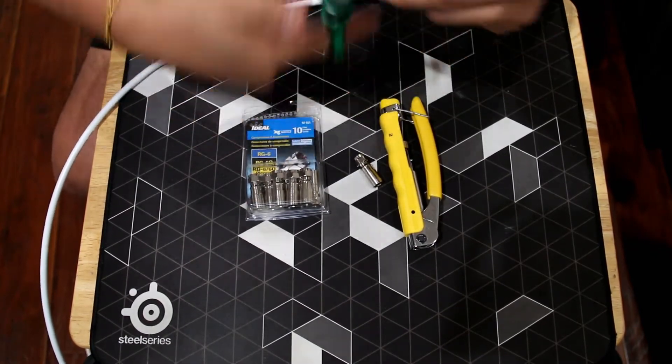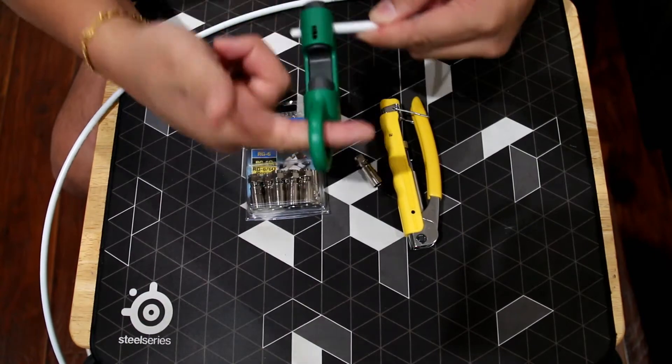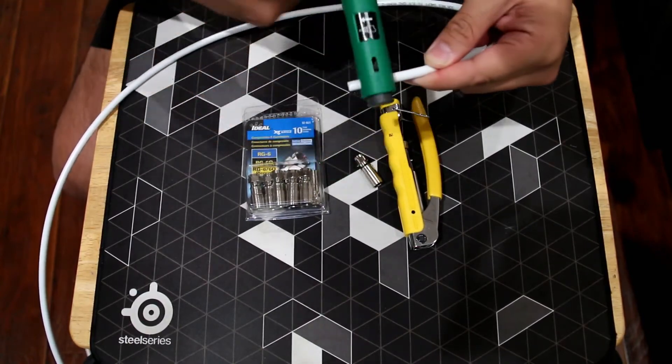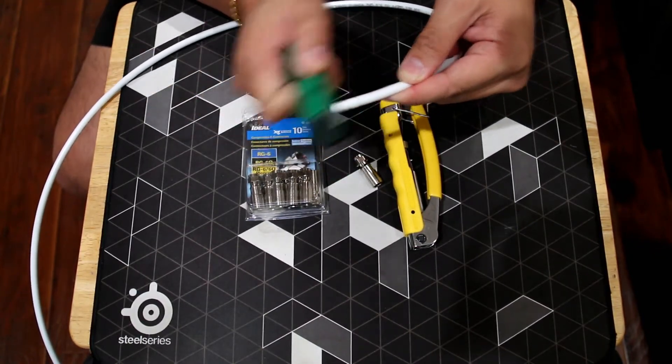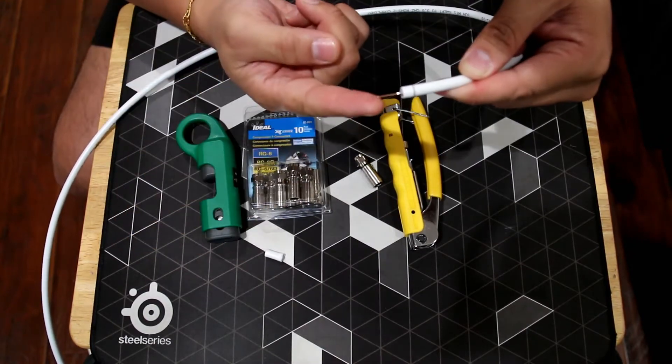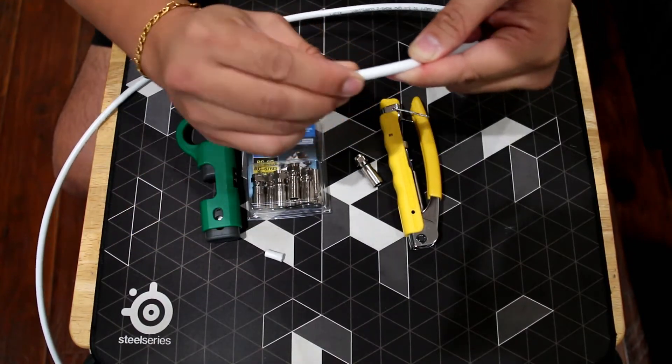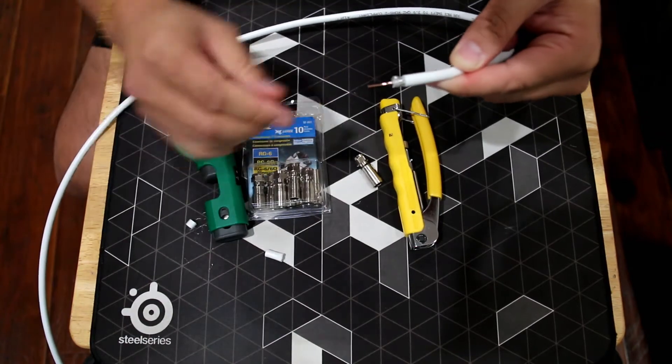The first blade in stripper will cut the copper wire. The second blade will cut the outer layer and leave the insulation. Like so. First layer, copper wire. Second layer, the braid insulation.